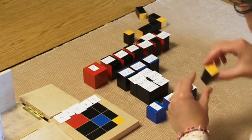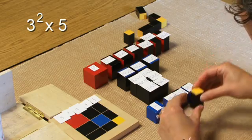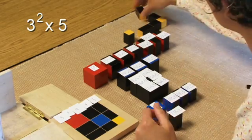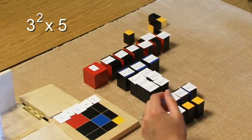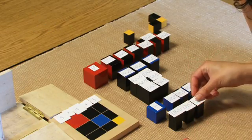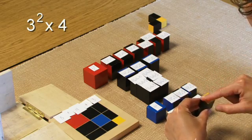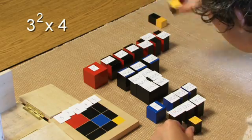Next, we have three squared times five, and we have three of those. Then we have three squared times four, and we have three of those.